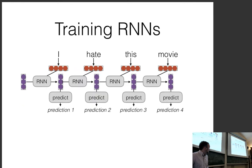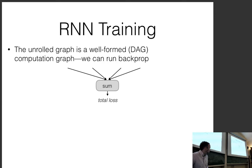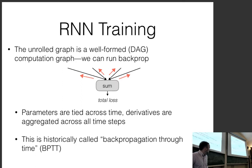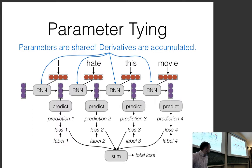For training RNNs: you use them to make predictions, have labels, and calculate a loss function at each position. You sum together the losses, get your total loss, and do backprop. The parameters in the recurrent neural network are tied across all individual applications of the RNN. The parameters for each function are shared, which means the derivatives are accumulated — all the losses flowing into each place will influence the RNN.